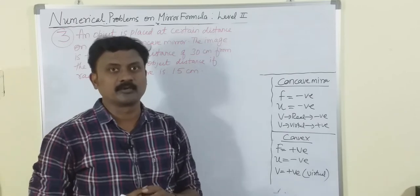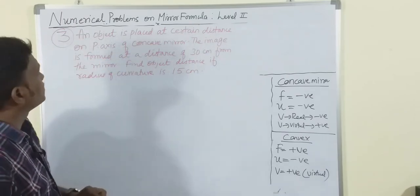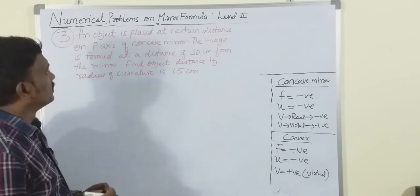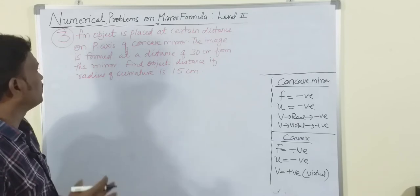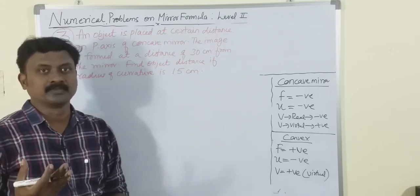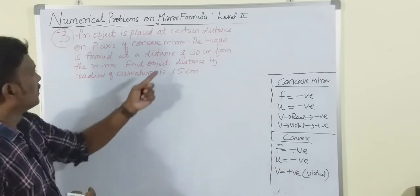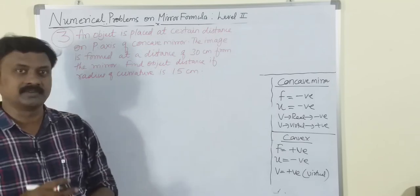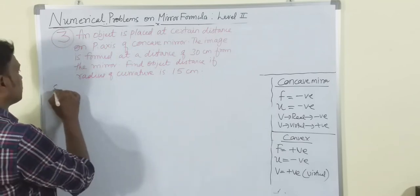Third problem: an object is placed at a certain distance on the principal axis of a concave mirror. The image is formed at a distance of 30 centimeters from the mirror. Find the object distance if the radius of curvature is 15 centimeters.